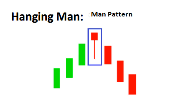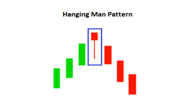Hanging Man is a single candlestick bearish reversal pattern that appears after a sustained up move. The candle looks like a hammer — the only difference is that it appears at the end of an uptrend. The candle should have a small body at the top, red or green, and a lower shadow at least twice the length of the body, with very small or no upper shadow. A red coloured body is more bearish than a green body. The confirmation happens when price moves below the low of the candle, upon which a trader may take a short trade with stop loss above the high of the candle.